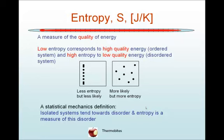Entropy is a measure of the quality of energy in a system. This is illustrated in the figure shown. A low entropy state corresponds to high quality energy — an ordered system. In the case of the gas in the box, the ordered system is all the gas molecules lined along one boundary.